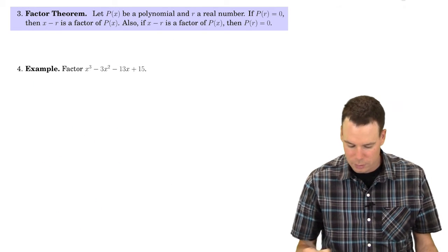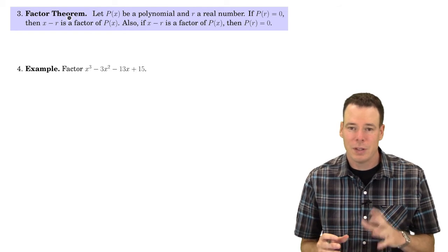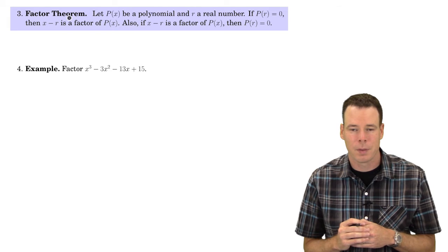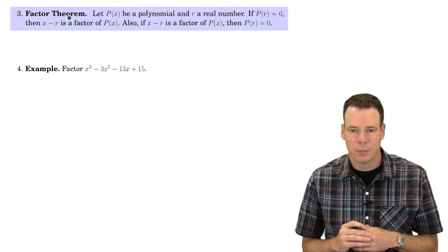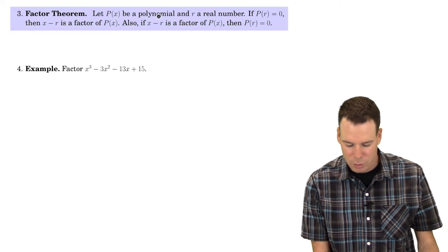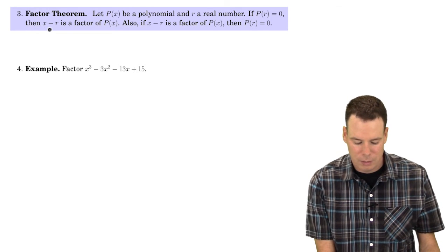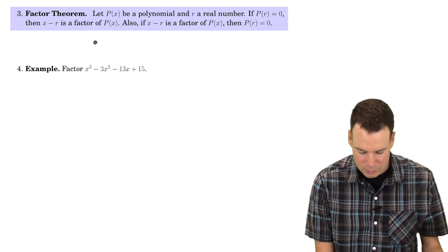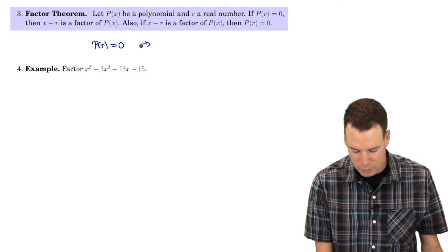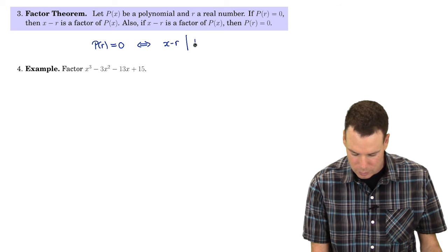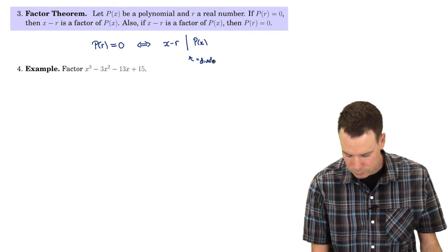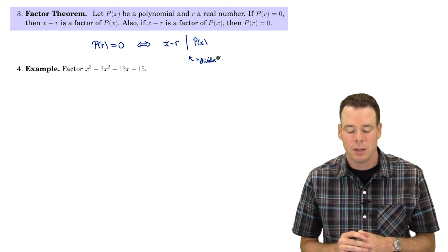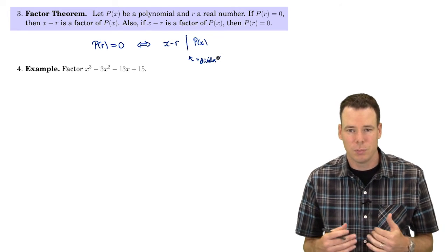Let's look at the factor theorem. When we have a rational function we want to simplify, we need to factor the polynomial on top. The factor theorem says: if you have a polynomial p and a real number r, then r is a root of p if and only if x−r is a factor of p — that is, p(r)=0 if and only if (x−r) divides p(x). So if we want to factor a polynomial and can't eyeball the factors, we look for roots.